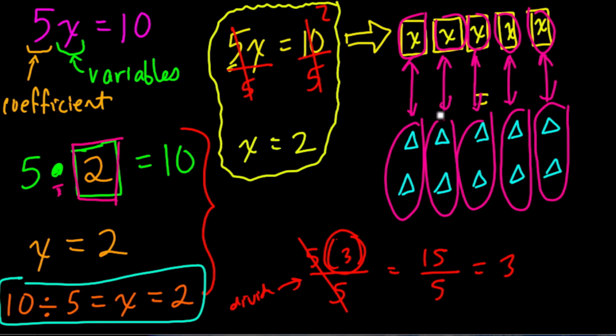So we divide both sides by 5 and we got x equals 2. Here, this is a picture of what's happening. 5 x's equals 10 things. Divide both sides by 5 and you can see that each unknown x equals 2 triangles.